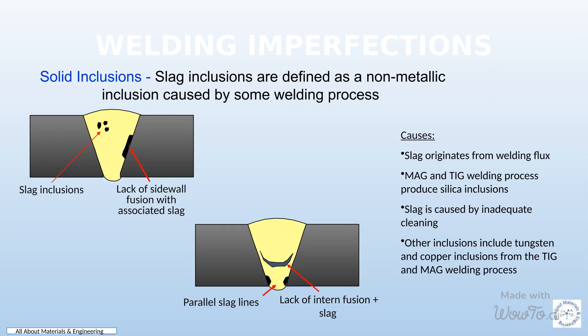Solid inclusion refers to the presence of foreign solid materials within a substance or material. There are various causes of solid inclusion, including manufacturing defects, contamination, and improper handling or storage. In manufacturing, solid inclusions can occur due to poor quality control, such as inadequate filtering or purification processes, resulting in the presence of impurities. Contamination can also occur during transportation or storage where foreign particles can enter the material.